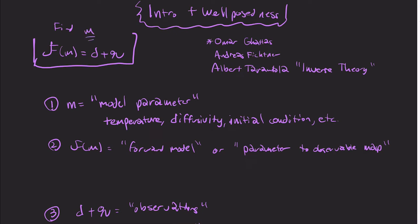And we're solving for m. So that's why it's called an inverse problem. Because if we have the inverse of this operator f, we just apply it to both sides. And from that, we recover m. So m is our model parameter here.